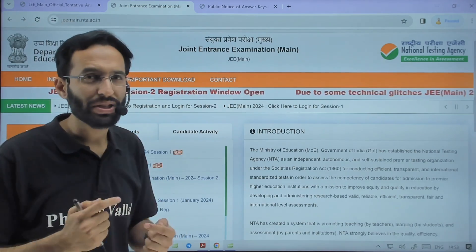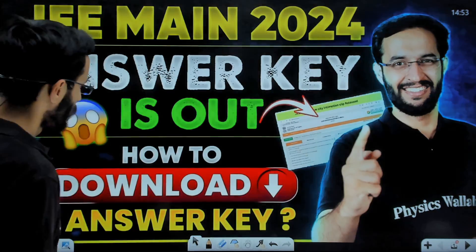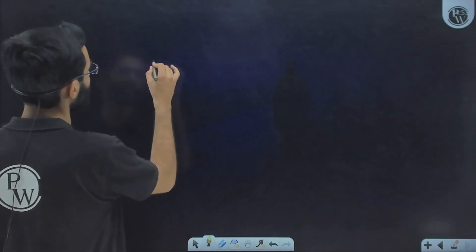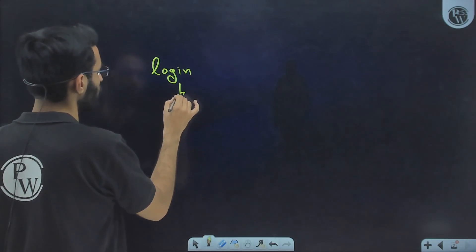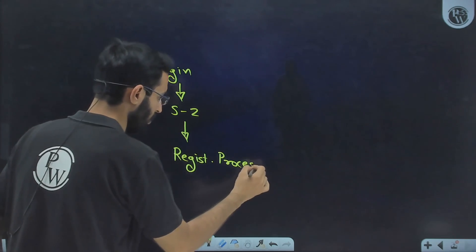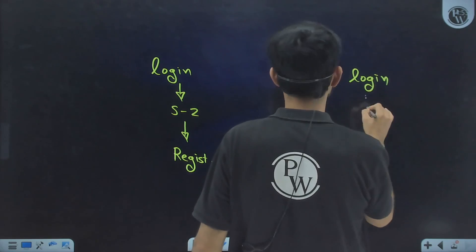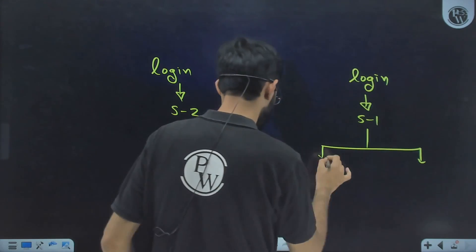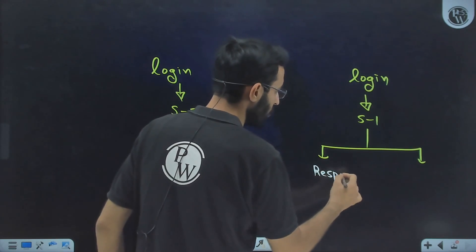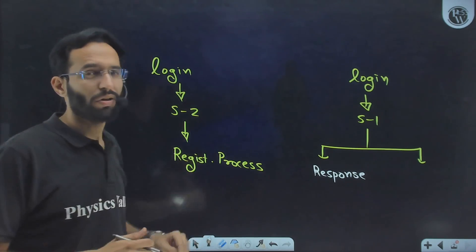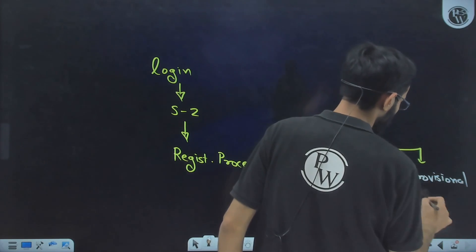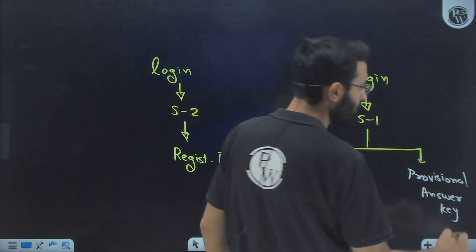Let me guide you about the step-by-step procedure. First, you need to log in. There are two logins — one for Session 2, which is its registration process, and another for Session 1. Log in for Session 1. Once you log in, you will be able to see two options: one is your response sheet, where you can see all the answers you marked; and the other is the provisional answer key, which you can see on the challenge section.